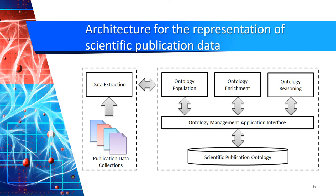The architecture of this approach consists of a first step: the data extraction from publication data collections, and then a second module to manage scientific publications by using an ontology. Here we need first to have an ontology model to represent scientific publications, also an ontology management application interface which supports ontology population, ontology enrichment, and ontology reasoning.